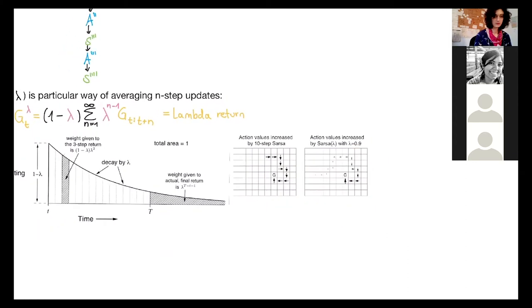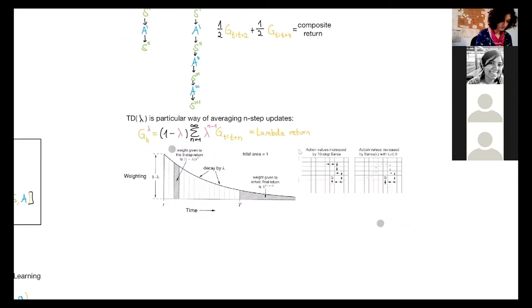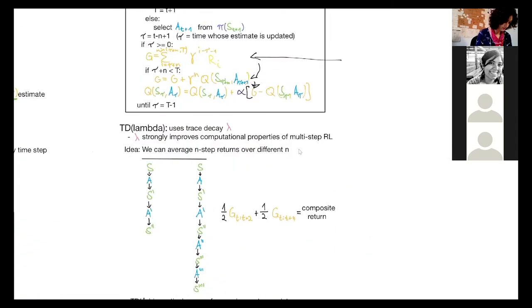Just to interrupt you shortly, Georg wants to go back to the n-step return again. Just to have the definition on screen would be helpful, at least for me, because apparently there is some detail relevant for how this averaging works.